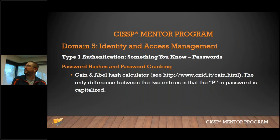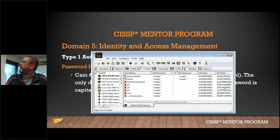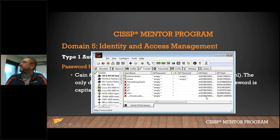Looking at a hash calculator demo — the only difference between the two entries is that the 'P' in 'password' is capitalized. You can see the LM hash versus the NT hash. The LM hash is less secure, which is why in Active Directory you want passwords 16 characters or longer. If passwords are the same, their LM hashes are identical — you can compare and immediately spot duplicates.